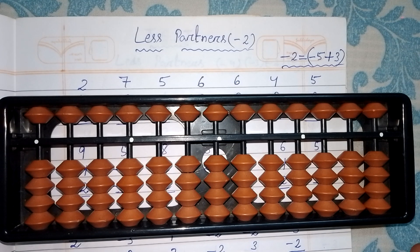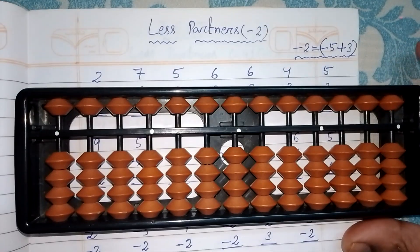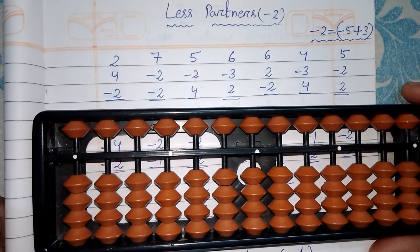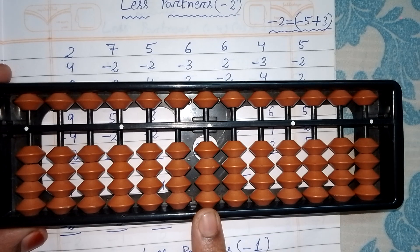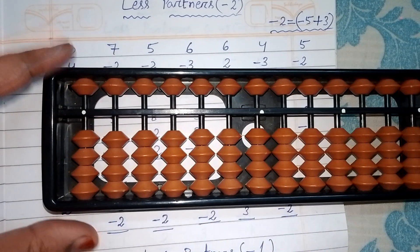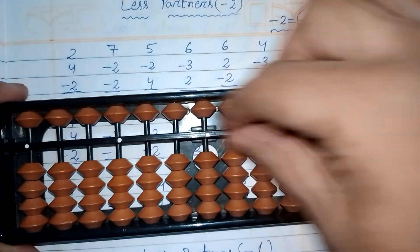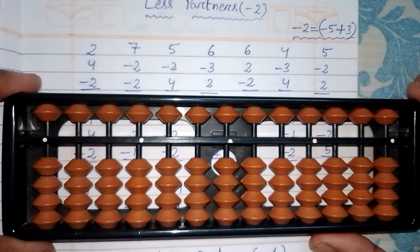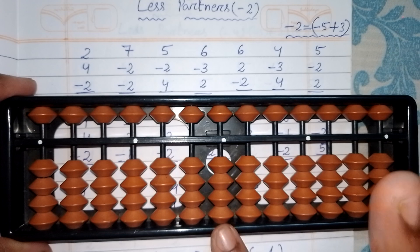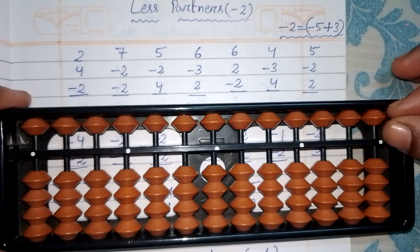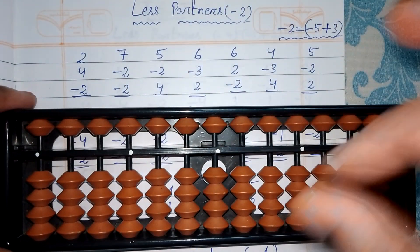If you are new to my channel, please subscribe and watch my previous videos so you can understand this topic easily. Now let's start. This is the units rod. Hold your abacus with your left hand using the index finger and thumb. After setting zero, we do all single-digit sums on the units rod only.